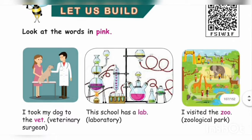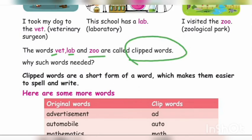Look at the words in pink. What is given here? 'I took my dog to the vet' — that is the short form of 'veterinary surgeon.' This school has a lab — the full form is 'laboratory.' I visited the zoo geological park. The words vet, lab, and zoo are called clipped words. Clipped words are a short form of a word which makes it easier to spell and write.